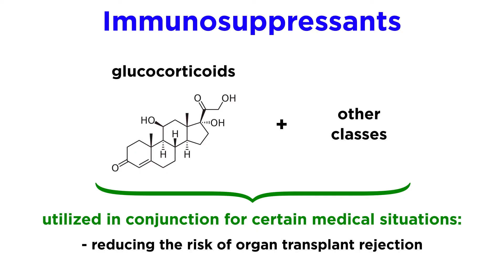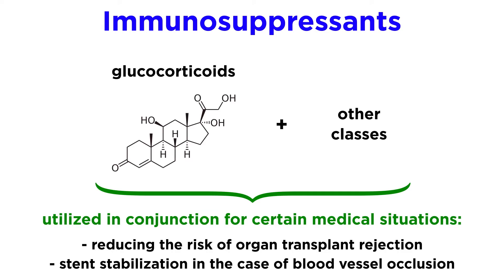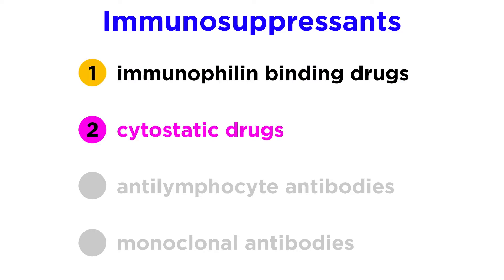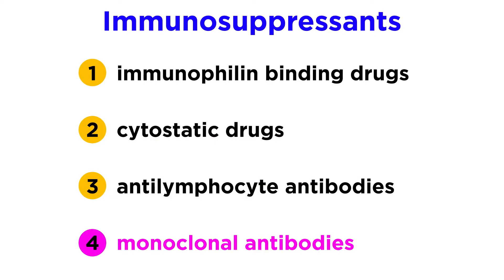These include reducing the risk of organ transplant rejection and stent stabilization in the case of blood vessel occlusion, to name a few. There are four main classes of non-glucocorticoid immunosuppressants: immunophyllin-binding drugs, cytostatic drugs, anti-lymphocyte antibodies, and monoclonal antibodies.